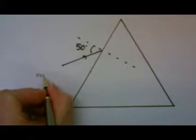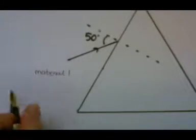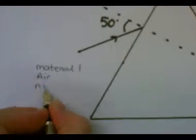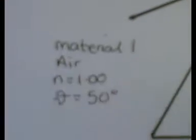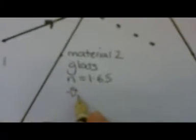How to solve the problem? Write down the things you know and the things you don't know. I'm going to have air as material 1 and glass as material 2. N1 equals 1.00, theta1 equals 50 degrees, N2 equals 1.65, theta2 equals question mark.